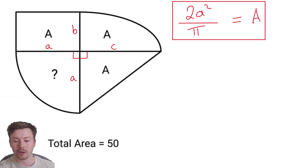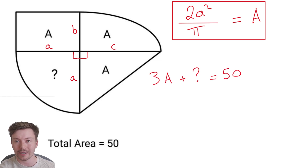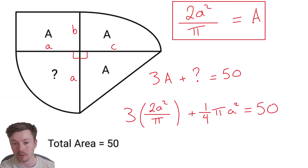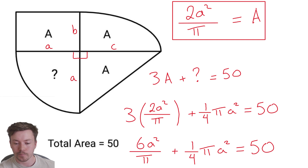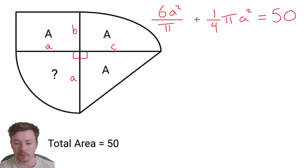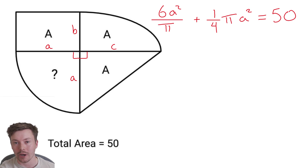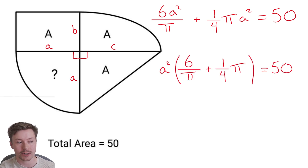Now I've got three capital A's plus the question mark equal to 50, because that's what we're told the total area is. I substitute my expression for A into that equation, and do three times the fraction by multiplying the numerator. We get six a squared over pi plus a quarter pi a squared is equal to 50. Factorising the a squared out: a squared times (six over pi plus a quarter pi) equals 50.